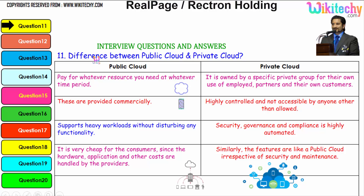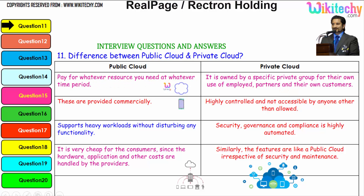So here is the question: difference between the public cloud and the private cloud. Public cloud is nothing but viewing a film in a cinema theatre, and viewing a film in your home using a DVD — that is your private cloud. So you pay for whatever resource you need at whatever time period.